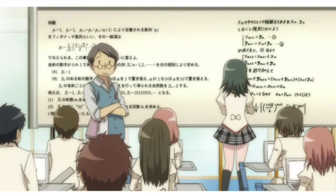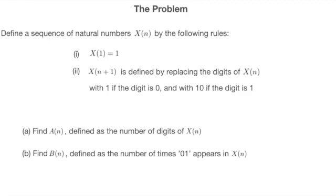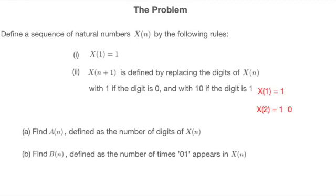Let's take a look at the question. They define a sequence of natural numbers X(n) which is generated recursively. The first number in the sequence is 1, and thereafter, to generate X(n+1), you replace each digit in X(n) with 1 if the digit is 0, and with 10 if the digit is 1.